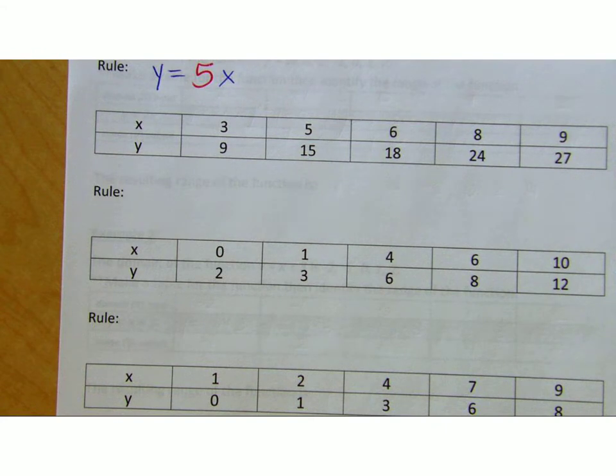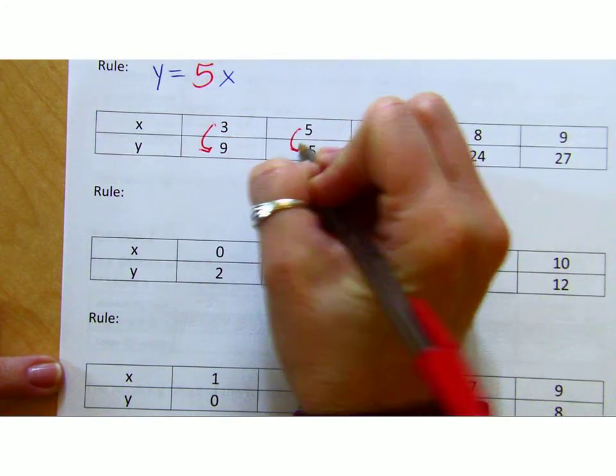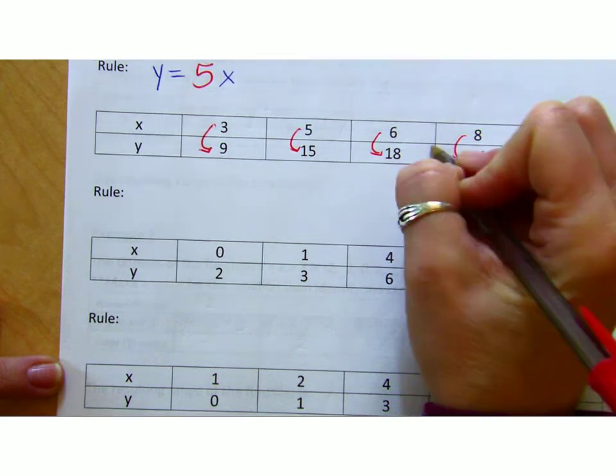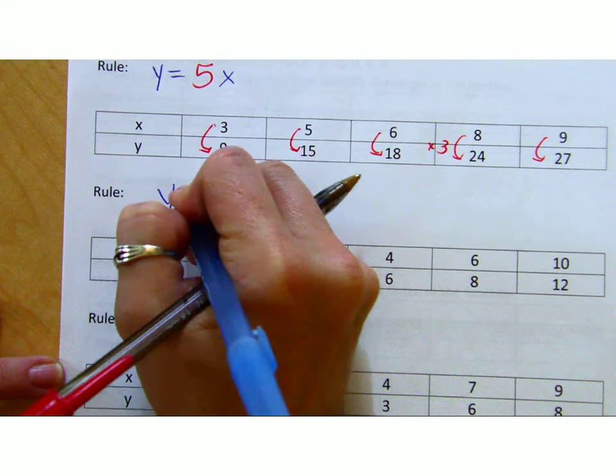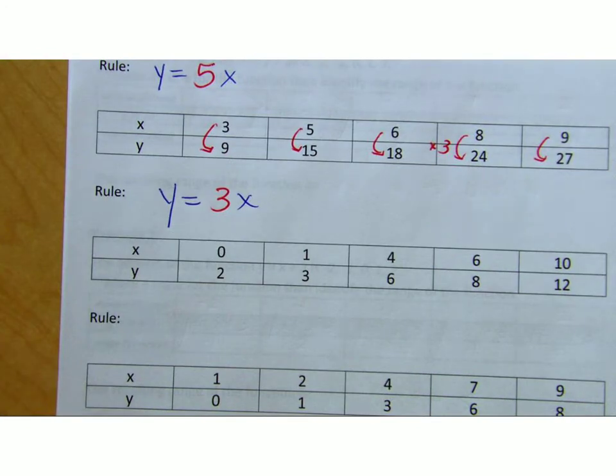Evan? It would be y equals 3x. Good. So he looked at 3 and 9, 5 and 15, 6 and 18. All of these are just being multiplied by 3, which means the rule is that all of the y values are equal to, this time, 3 times the x values. That's pretty simple.